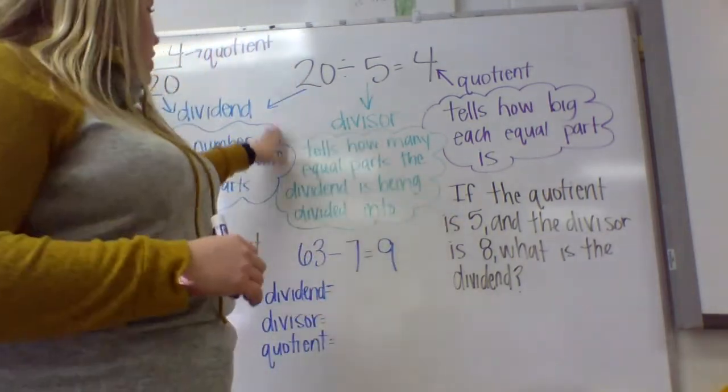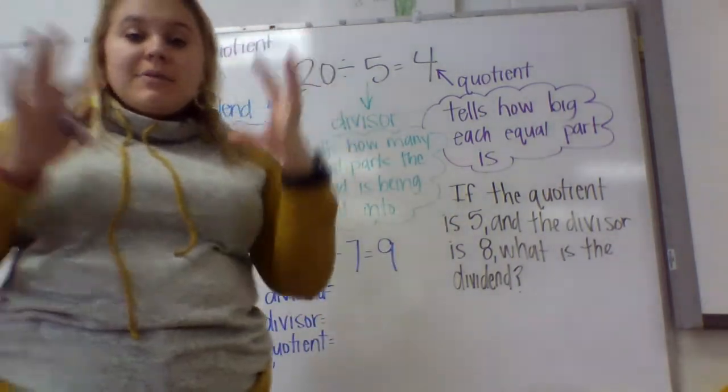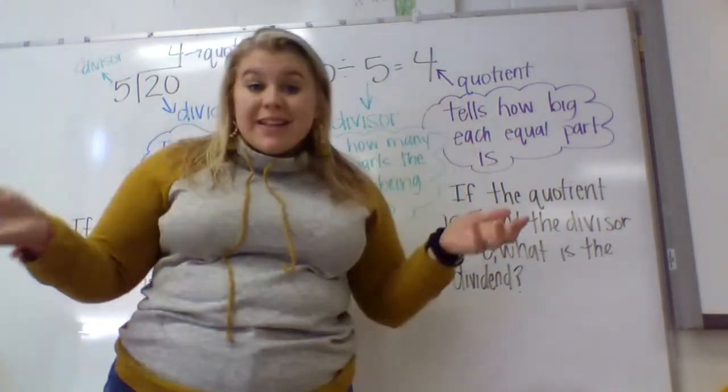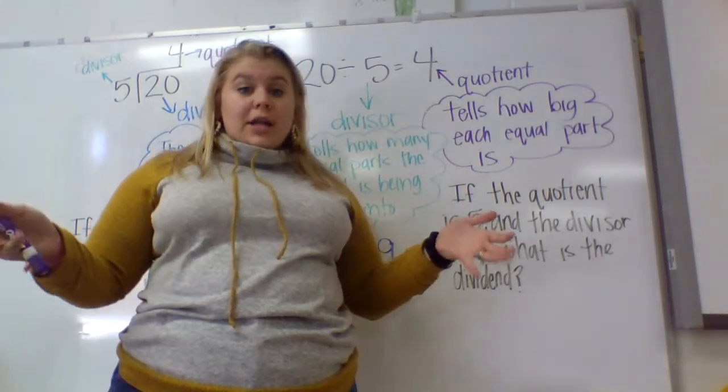So we know dividends are biggest. Divide it into the divisor. How many equal groups? Your quotient, that's always going to be your answer. How many are in each equal group?